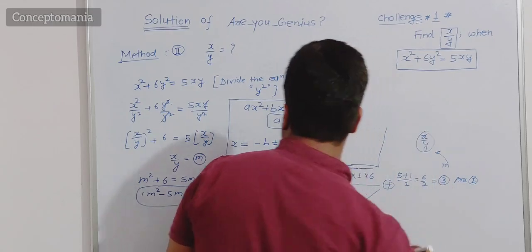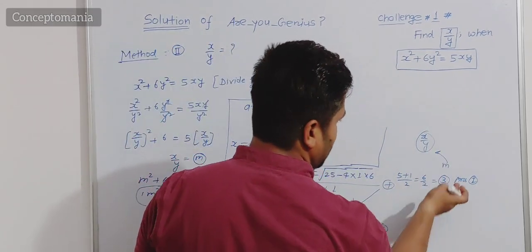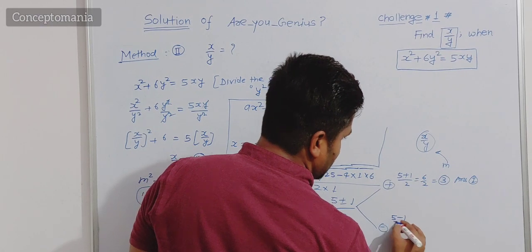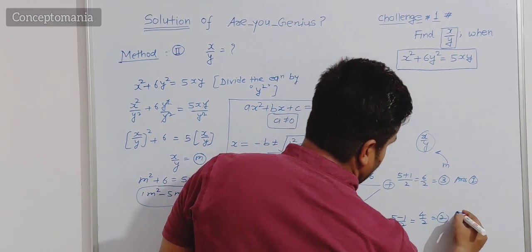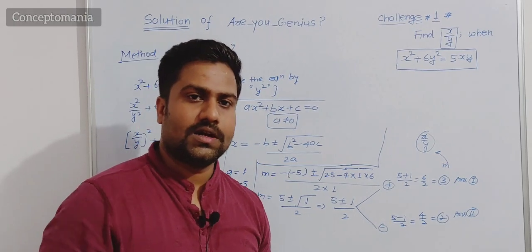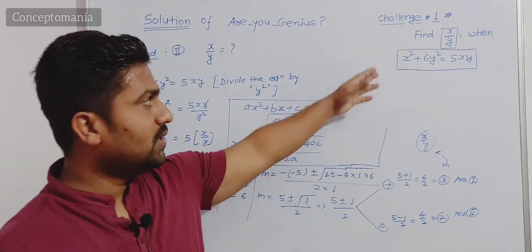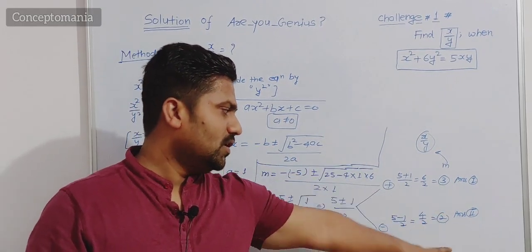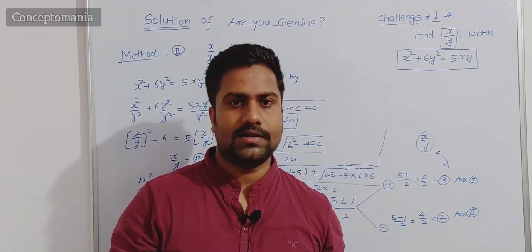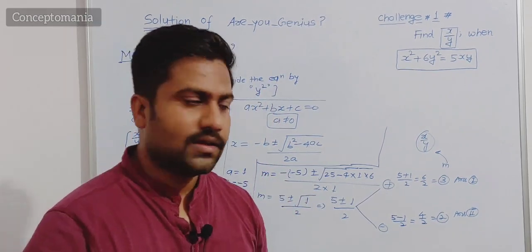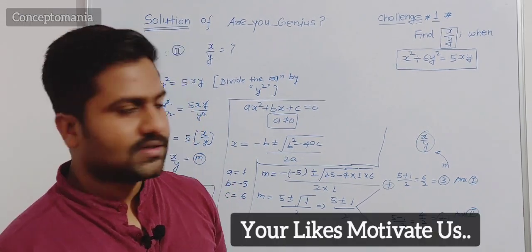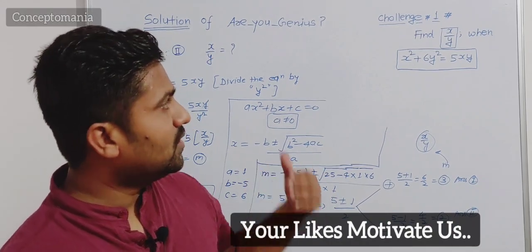M is x by y. So value of m in the form of x by y is 3 by 1 or 2 by 1. If you found this helpful, don't forget to subscribe — it will motivate us to create more challenges and continue to the next stage.